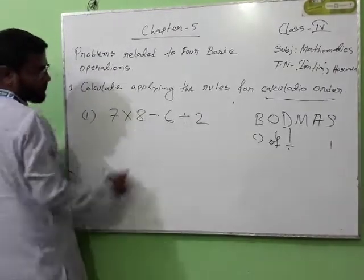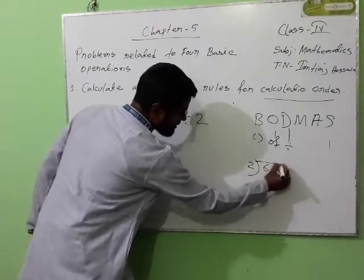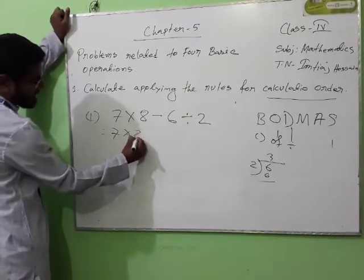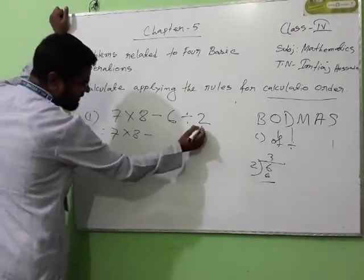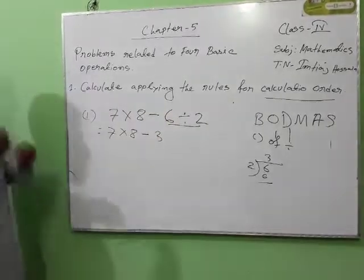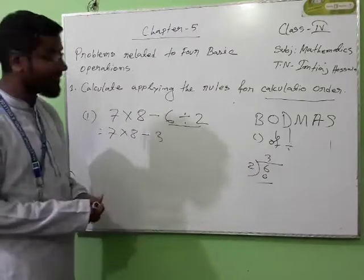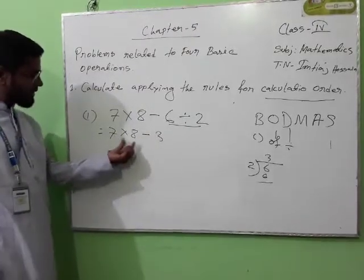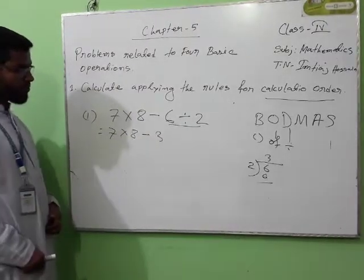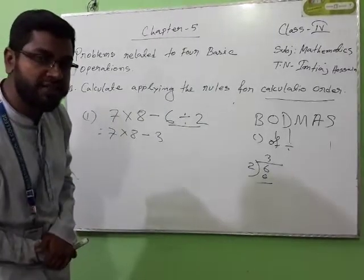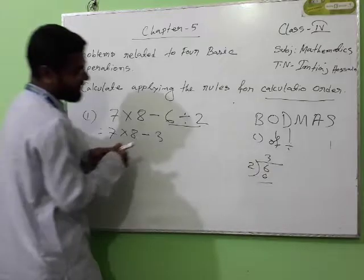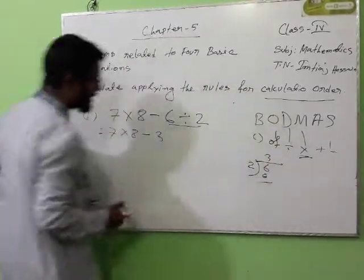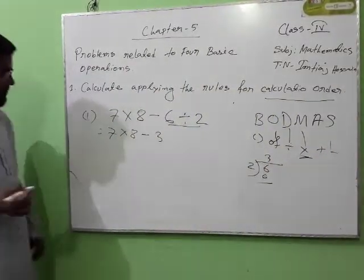Six divided by two is three. So on the next line, I will write: seven multiply eight minus three. Now one operation is removed. Then there are two operations: multiplication and minus. Which one will I do first? According to BODMAS, multiplication comes before subtraction. So multiplication is first, then subtraction.